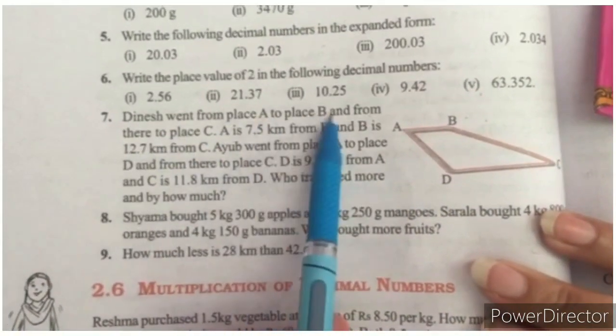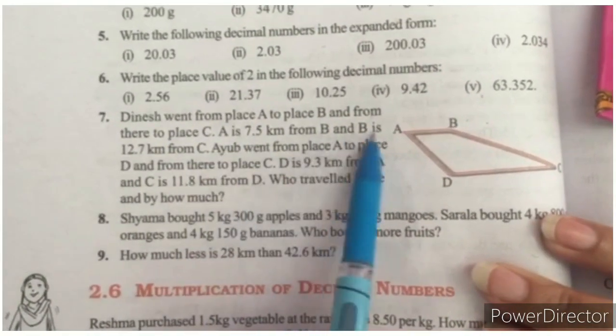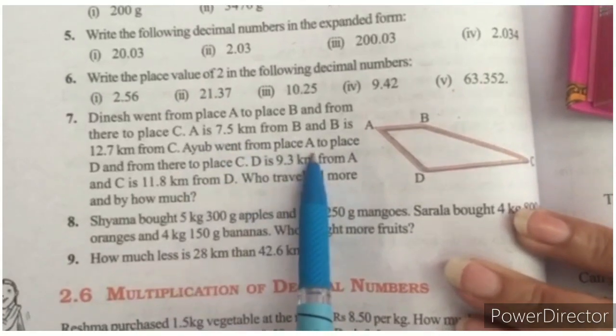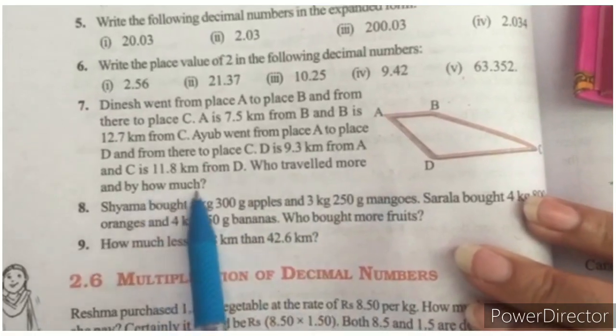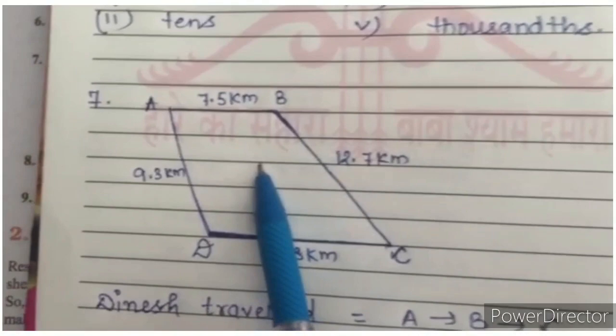Dinesh went from A to B and then from B to C. Distance is also given. Then Ayub also went from A to D and D to C. We have to find who travelled more distance and by how much. How can we do this question? First, we will draw this diagram.